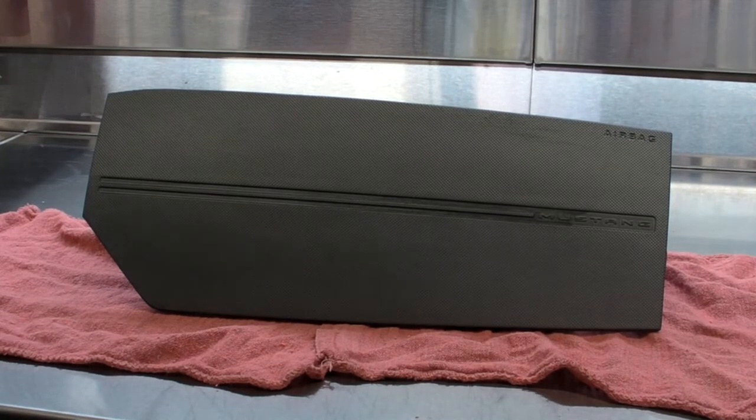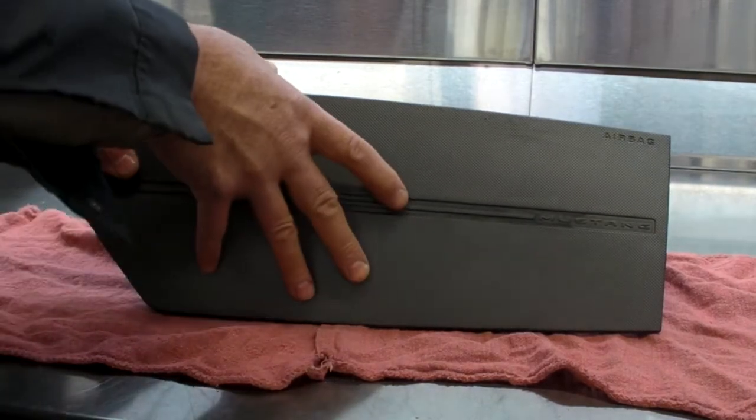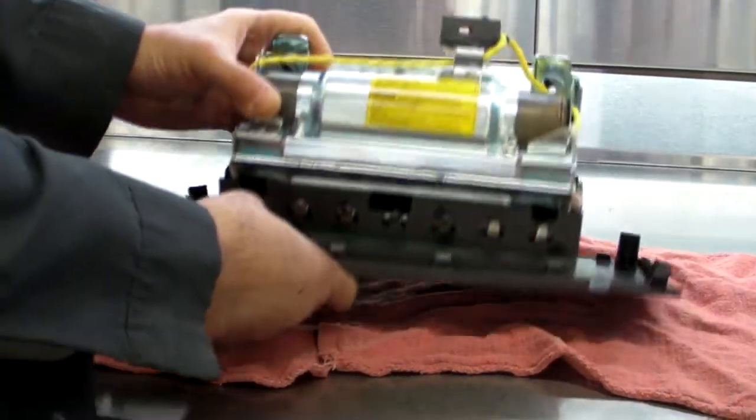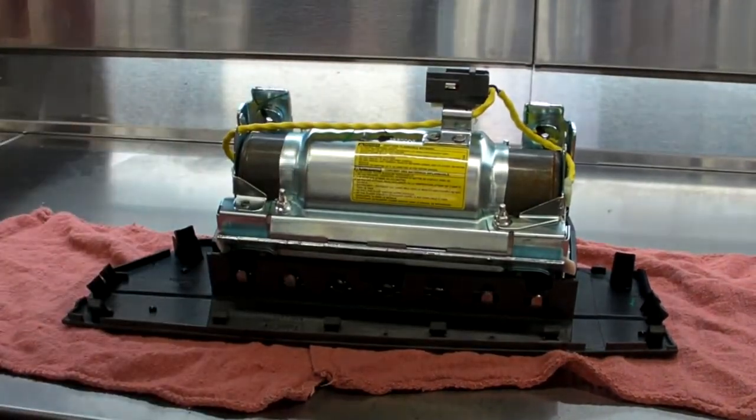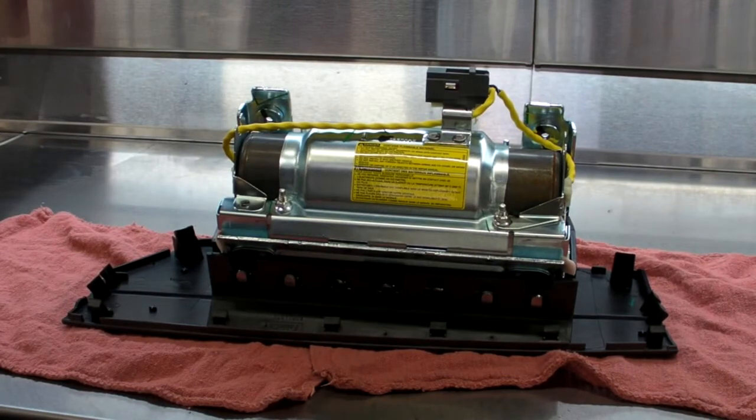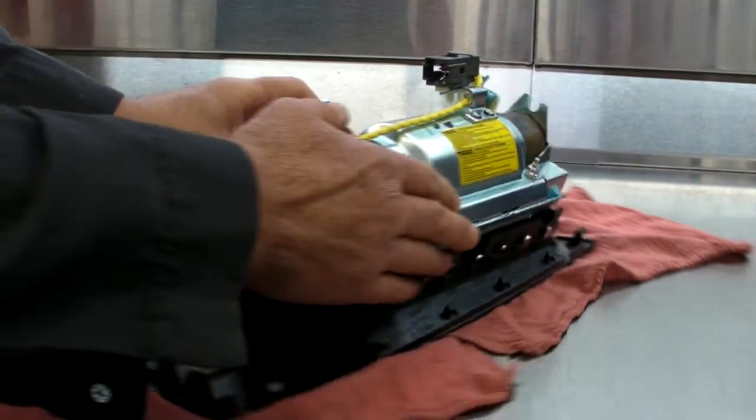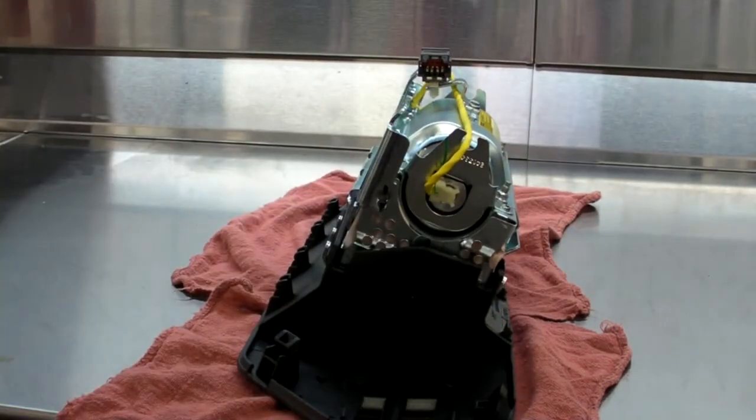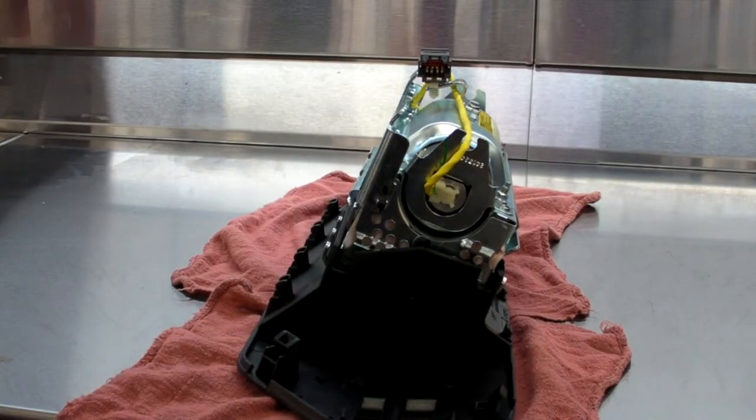I have an airbag here out of a Mustang for the Airbag Recall 16S26, the passenger side. One of the problems here is I'm going to have to disconnect one of these wires and I have to cut it because it has to go through that hole on the end.